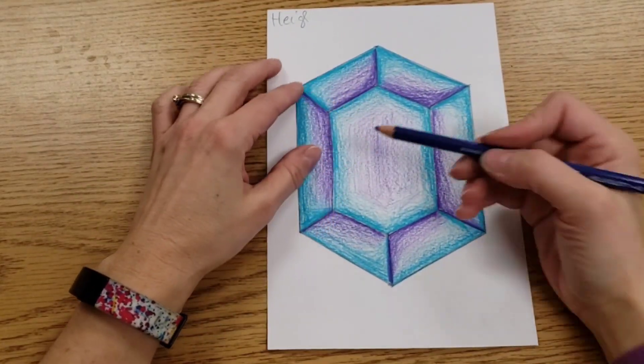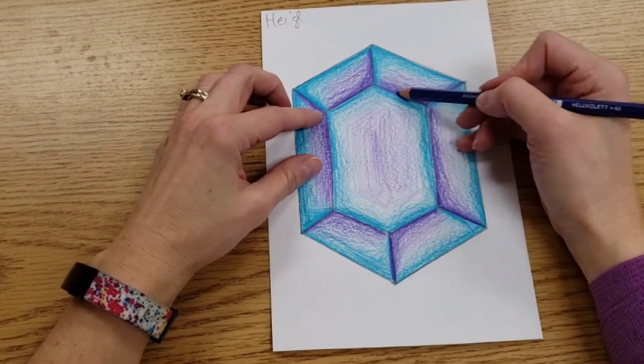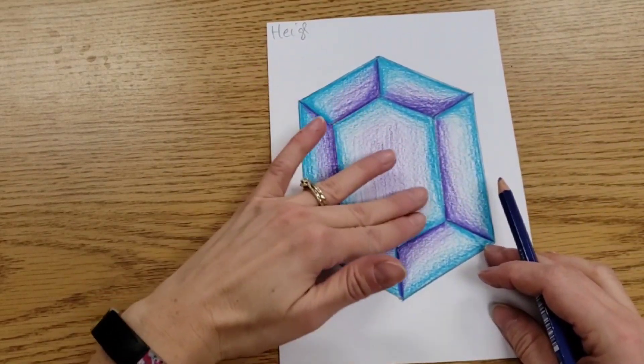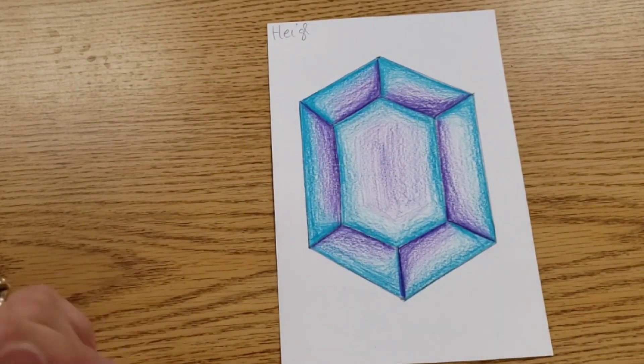Another option for the center is you could take, like I have the blue all the way around, I could take the blue and then fade it out and then just have kind of a lighter spot that's white in the middle of the page.